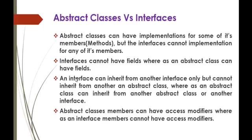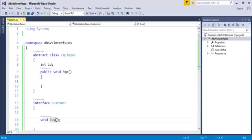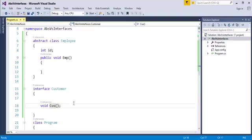An Interface can inherit from another Interface only, but cannot inherit from another Abstract Class. Whereas an Abstract Class can inherit from another Abstract Class or an Interface. For example, I will create an Interface to demonstrate this.